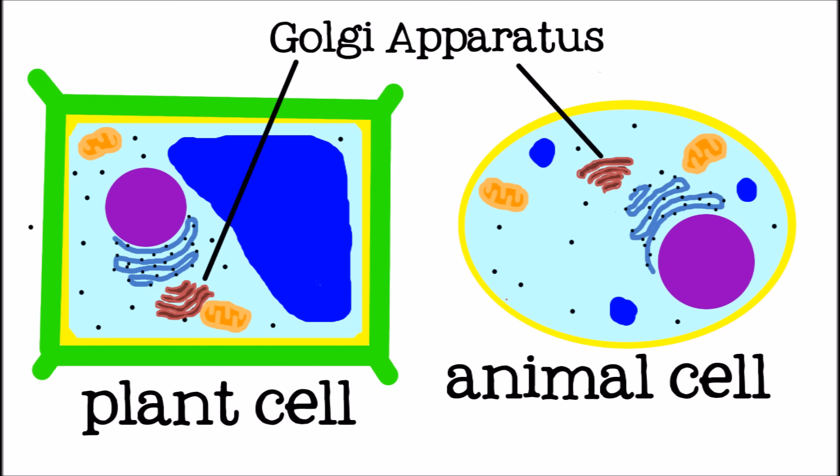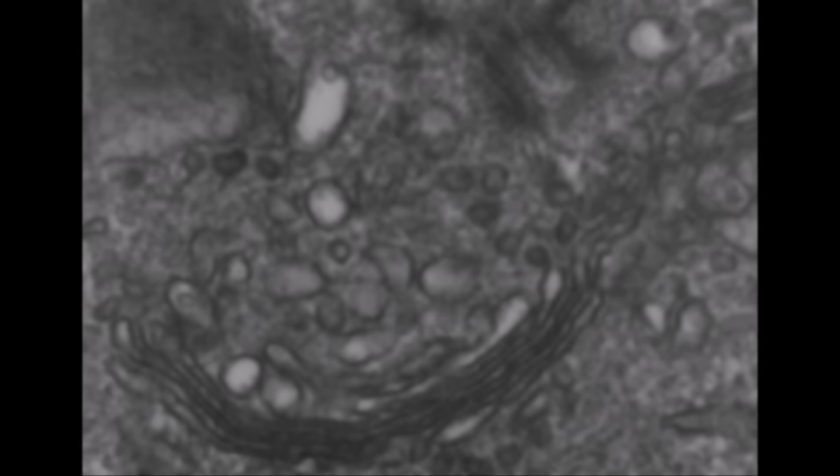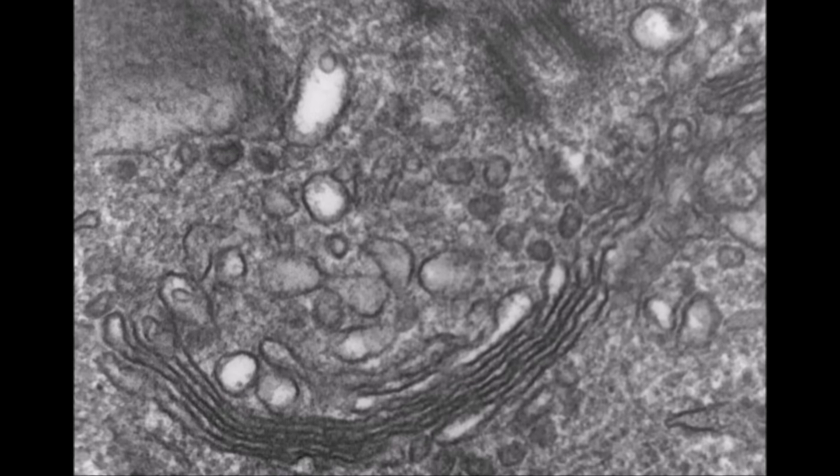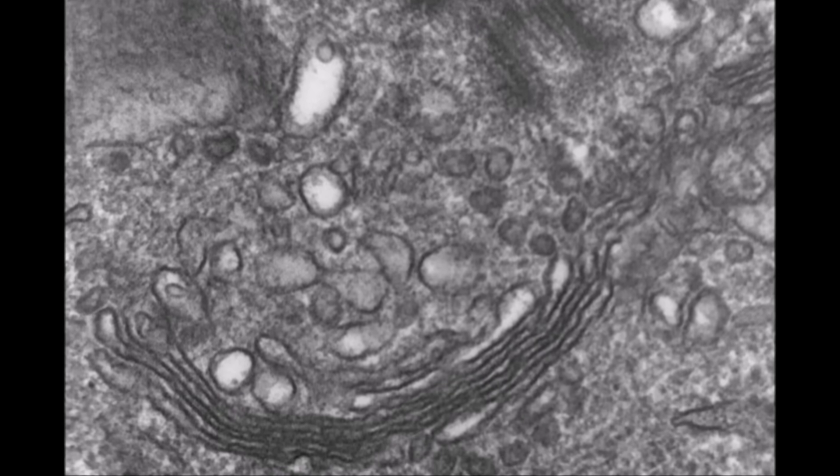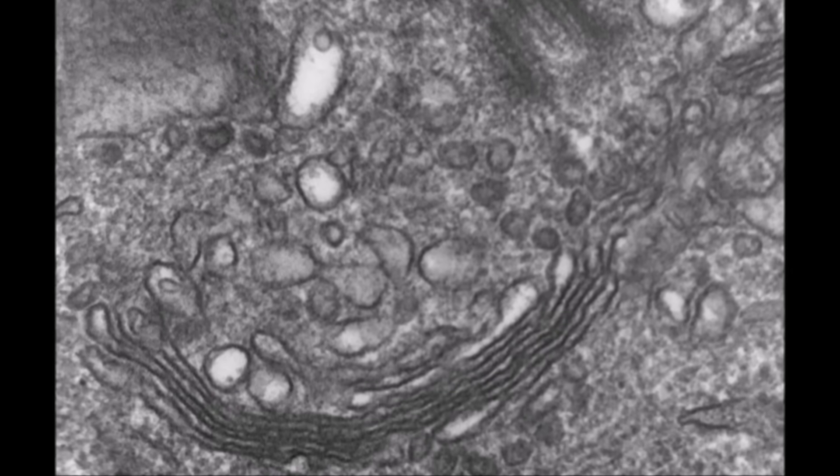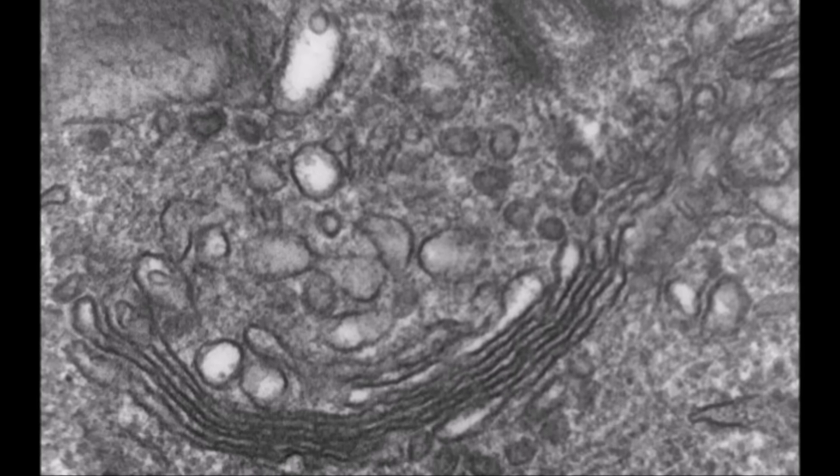The Golgi apparatus looks a little bit like a stack of pancakes, and it can be thought of as the post office of the cell. What it does is take things like proteins or other molecules that need to be transported around or out of the cell, and inspects them for flaws, packages them up, and sends them where they need to go.